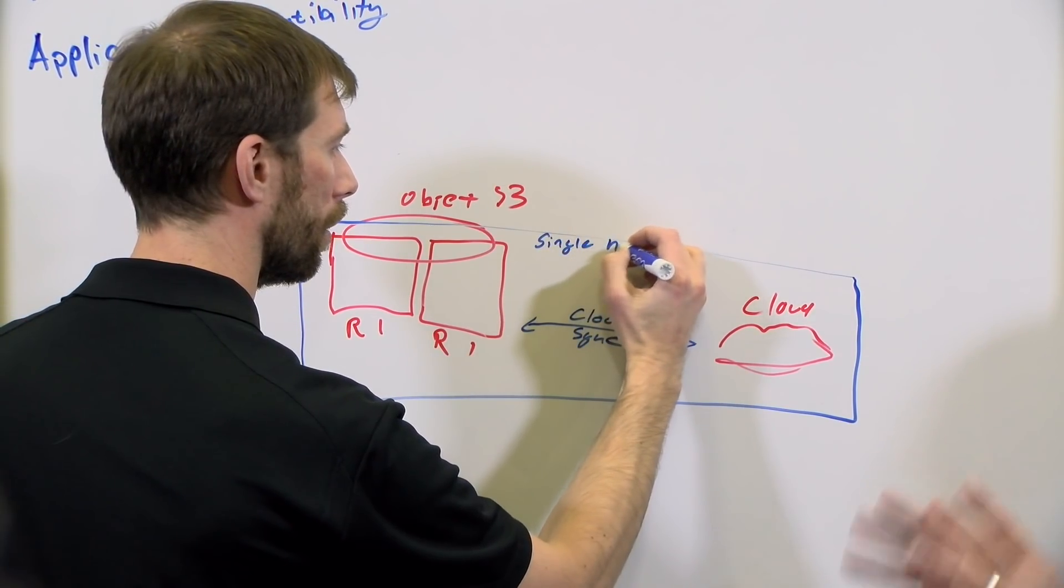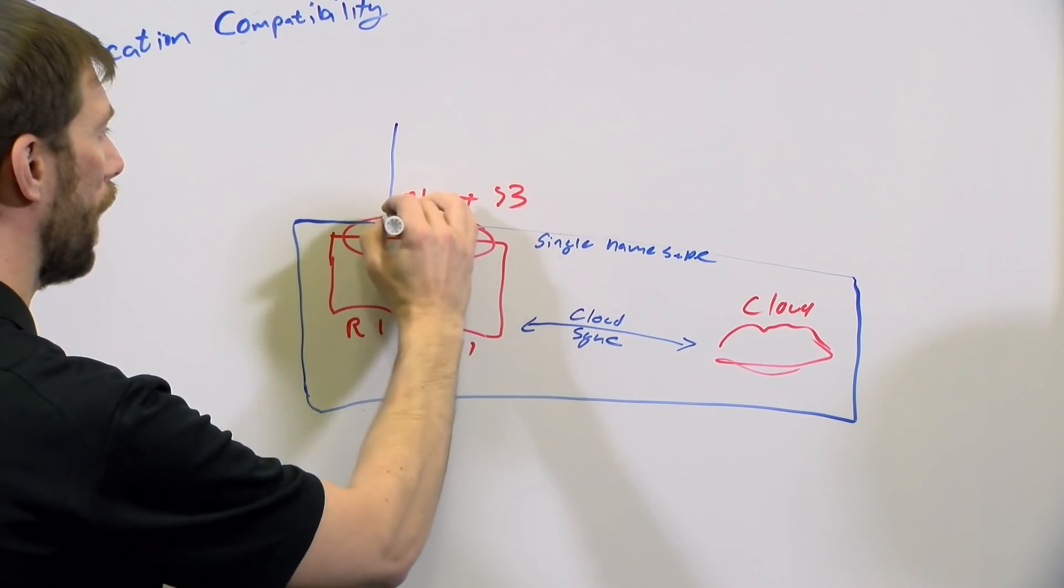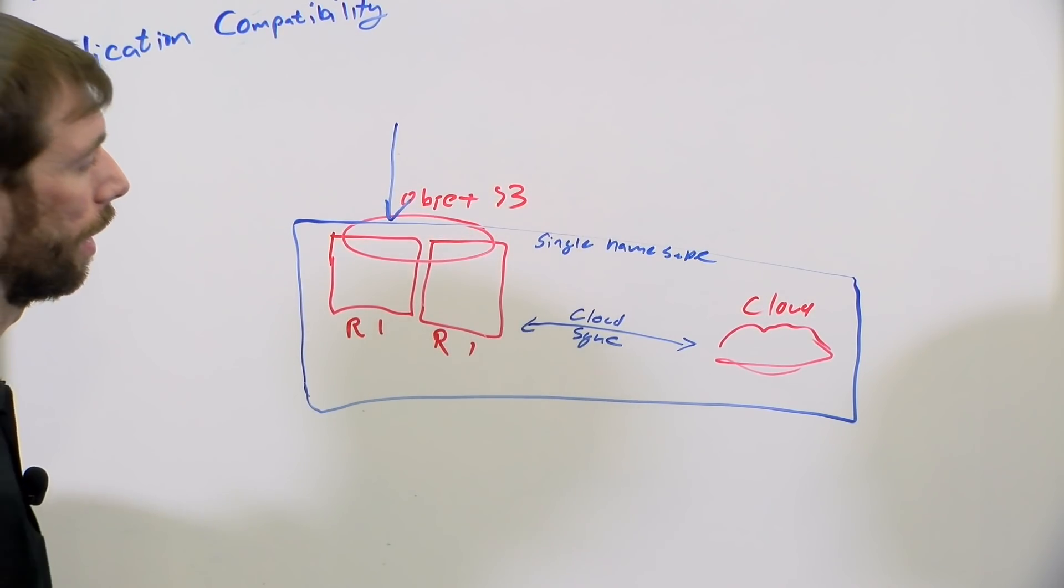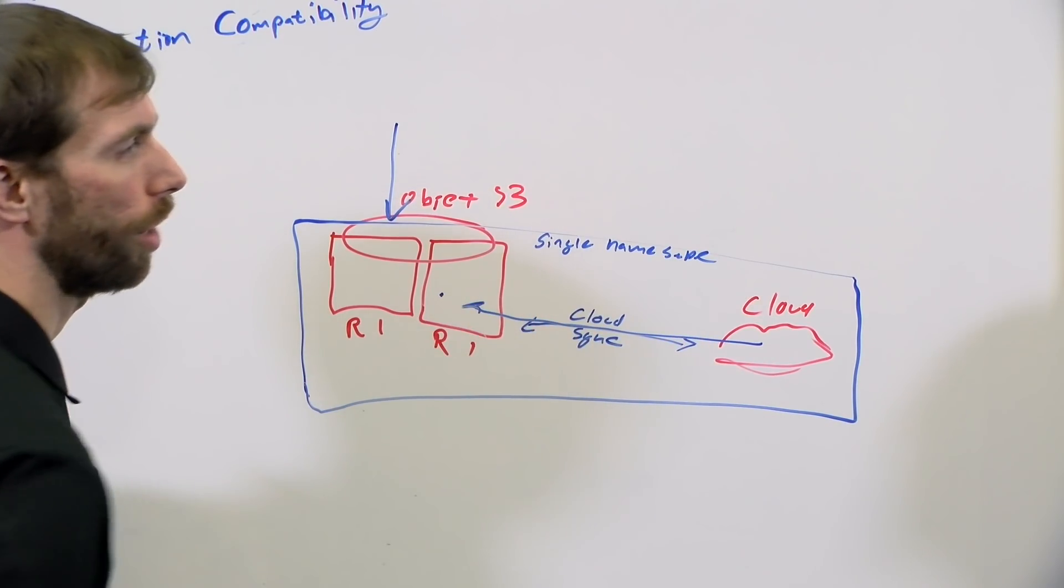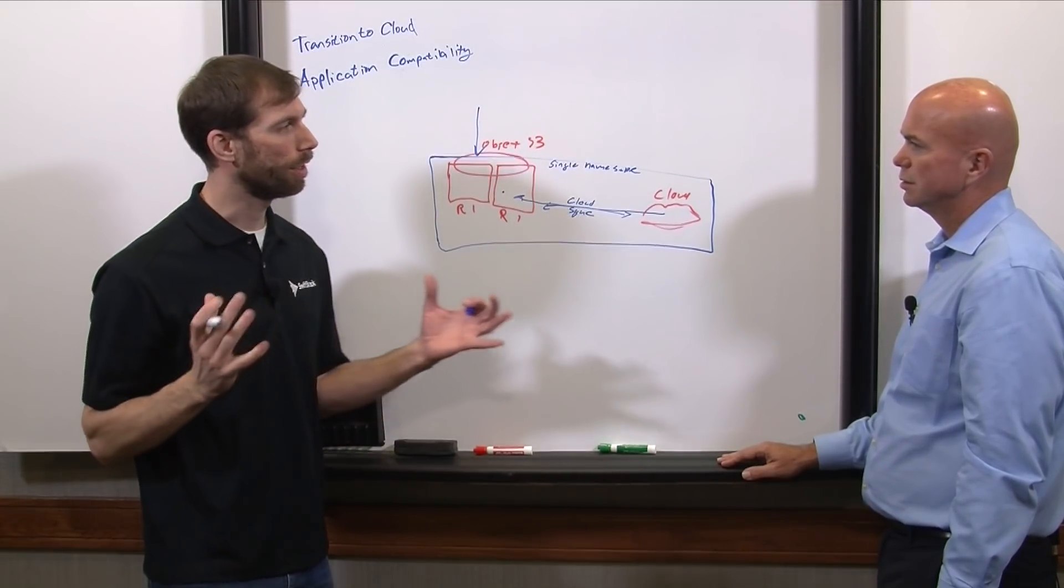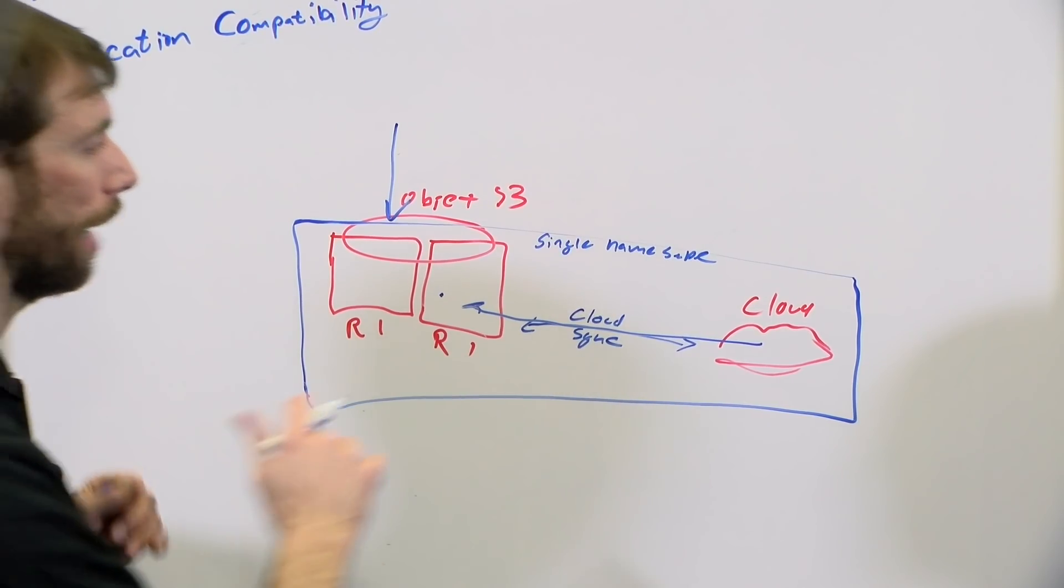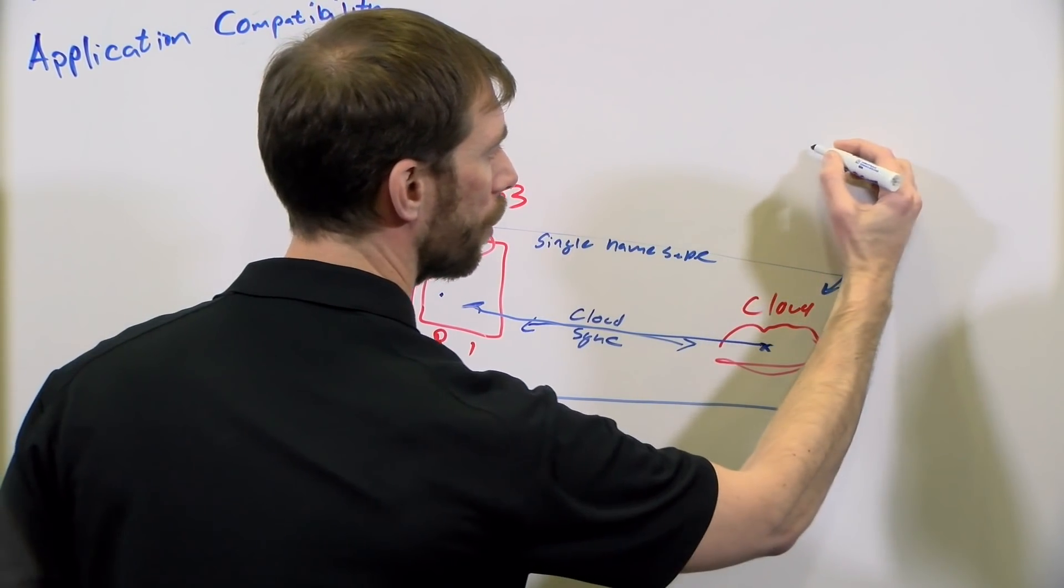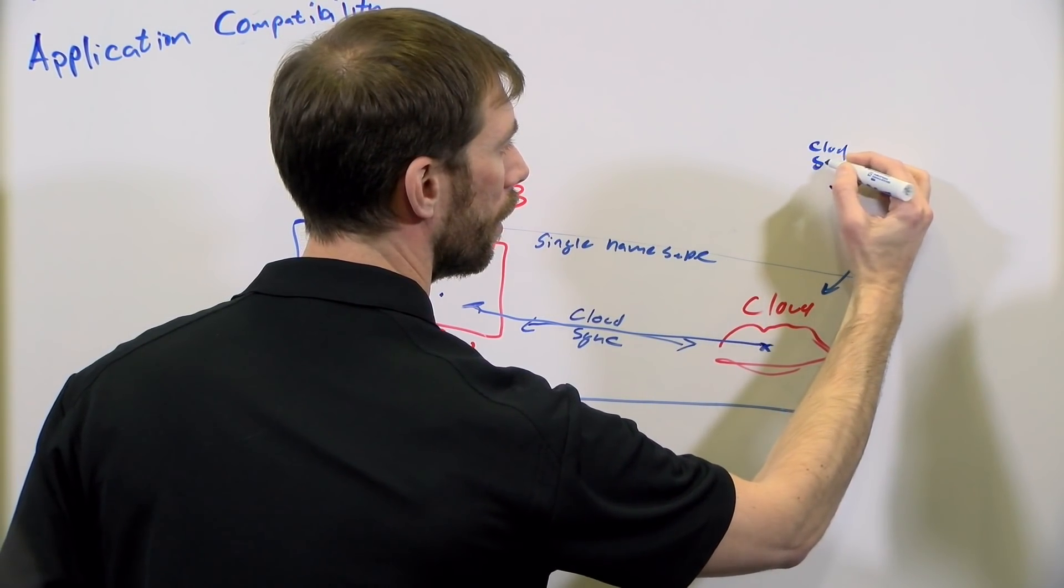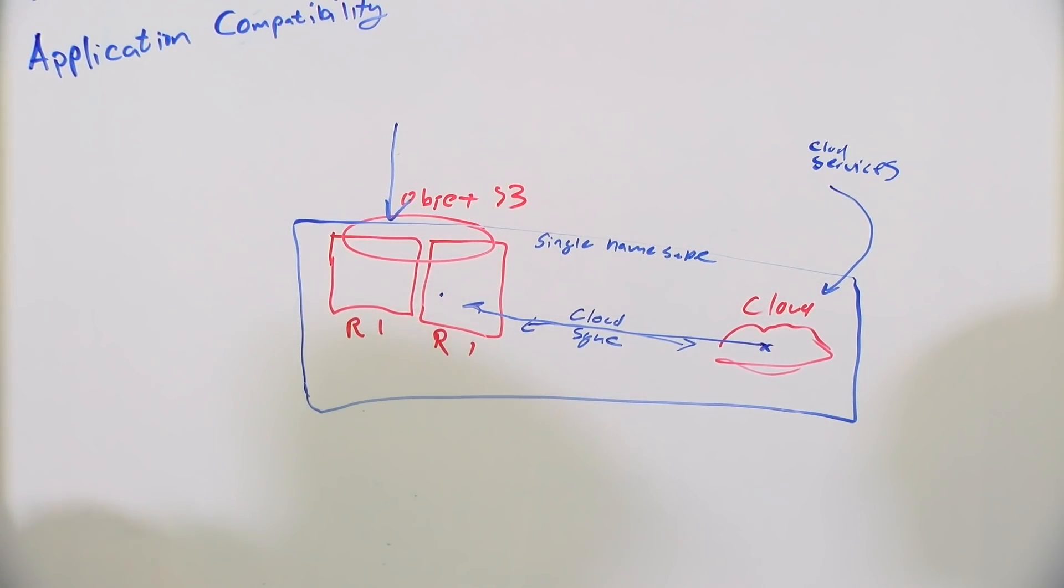And then what it does is it stitches together a single namespace. So I see this as basically one entity to manage at that point. That's correct. And when an API request comes for a bit of data, if it's not here, it will go fetch it and bring it back there. Gotcha. And that means the applications don't need to change. And they can continue to tier things out.